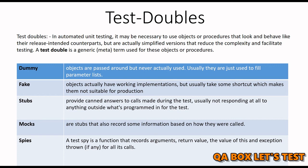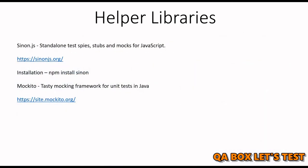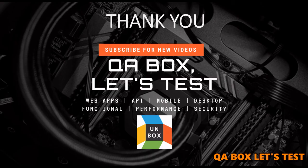You can compare a spy to CCTV — it monitors who has entered, how many times that person entered, and what they were carrying. These are the various test doubles available, and it depends on which library you are working on. For JavaScript, we have Sinon.js — a standalone test spies, stubs and mocks library for JavaScript. And then we have Mockito — a mocking framework for unit tests in Java. Thank you so much.